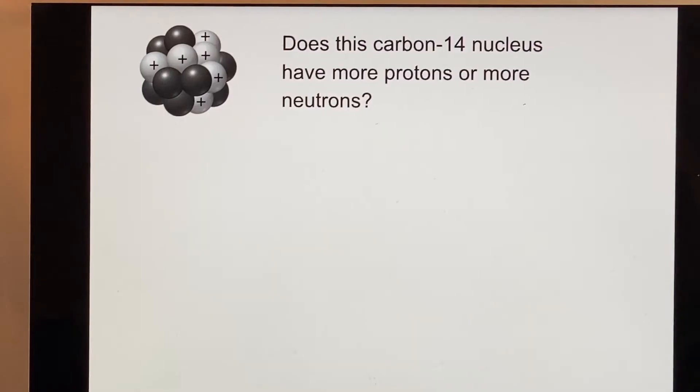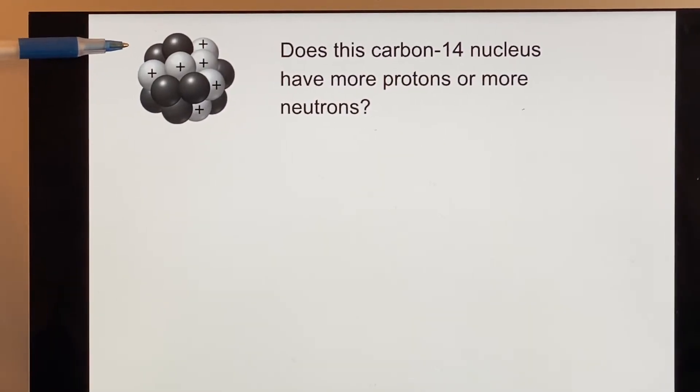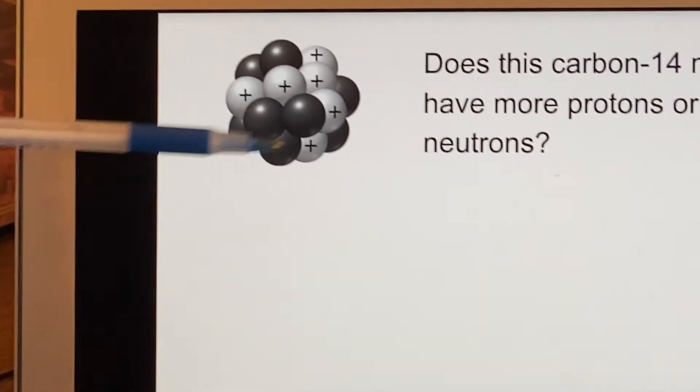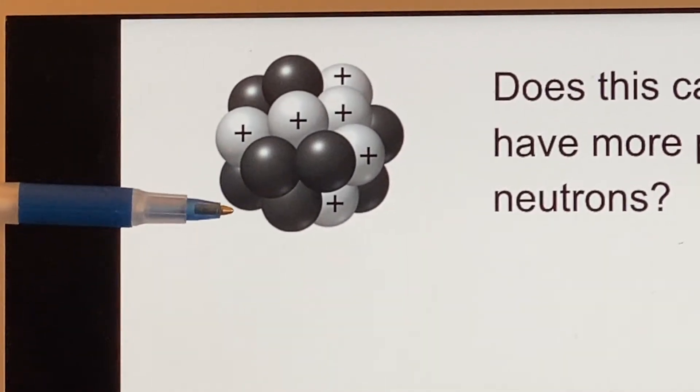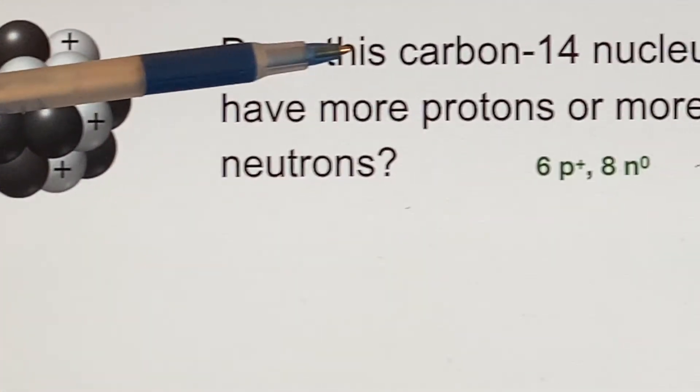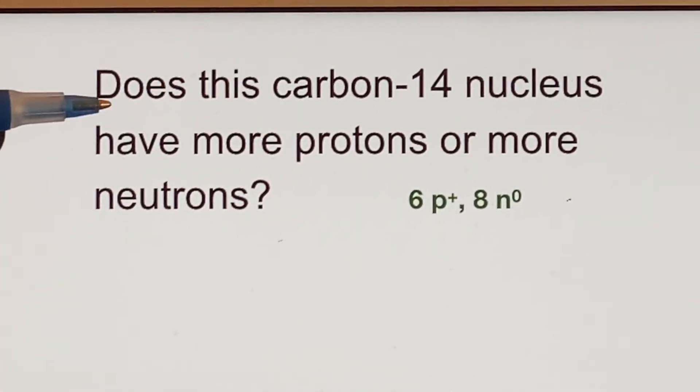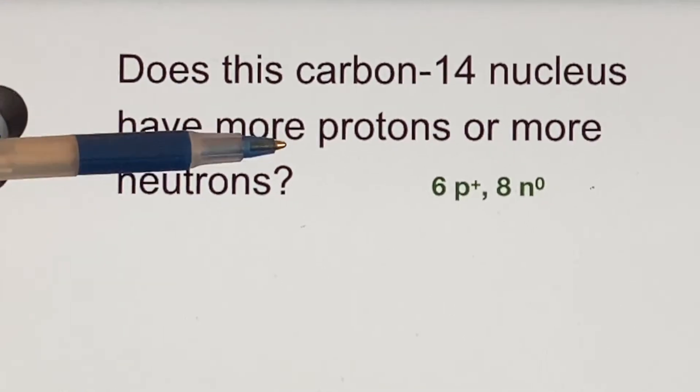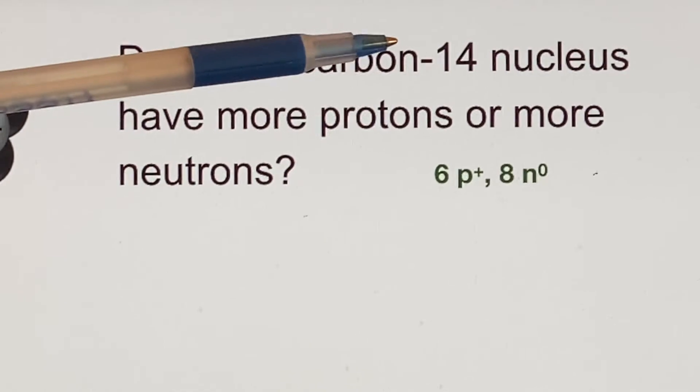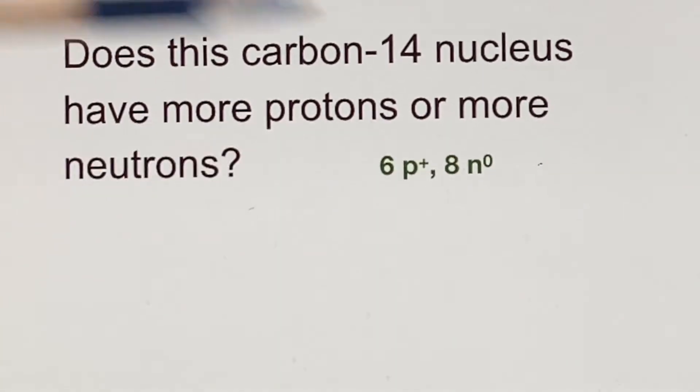Because they have the same number of protons, but different number of neutrons, they're the same element. So here's carbon-14. Does it have more protons or more neutrons? Well, in the picture, you can tell by counting. In general, you'll end up going over to the periodic table and saying, oh, they told me it was carbon. And that's element number six. So I know it has six protons and the rest of the mass must be neutrons. So 14 minus 6 gives you the 8.